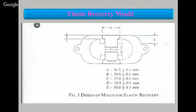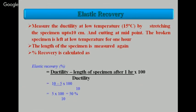The elastic recovery mold dimensions are slightly different from the ductility mold. The calculation: 10 minus 5 divided by 10 into 100 comes out to 50% elastic recovery.